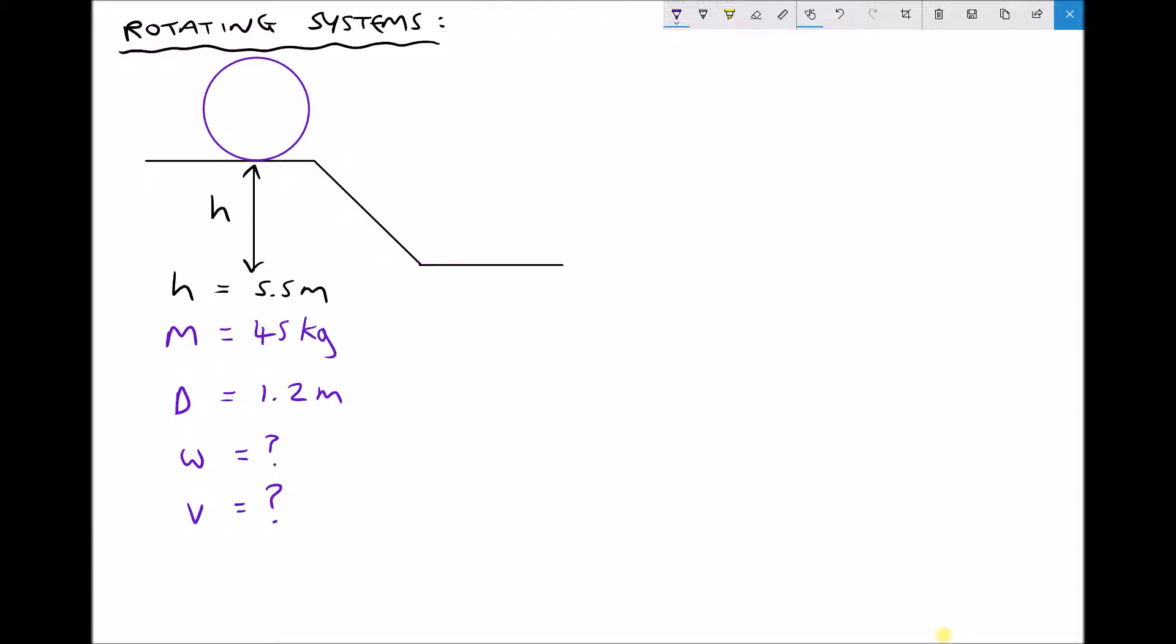Once again we have a conservation of energy problem and we know that the potential energy given to the barrel is going to be converted to kinetic energy. But we need to take a little bit of care here because when the drum reaches the bottom of the slope, it's going to have both linear kinetic energy because it's traveling in a linear direction, but it's also going to have angular kinetic energy because it's rotating at a certain angular velocity.